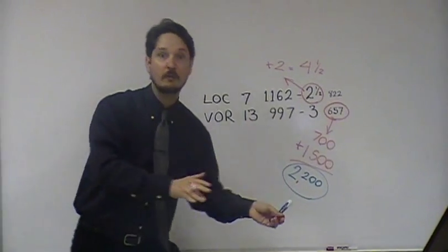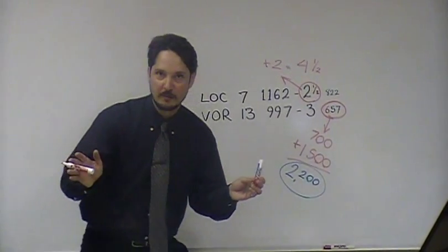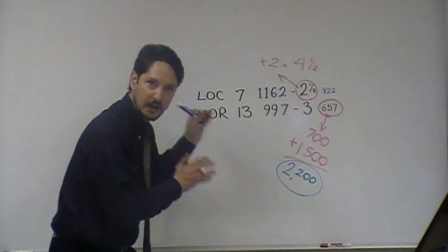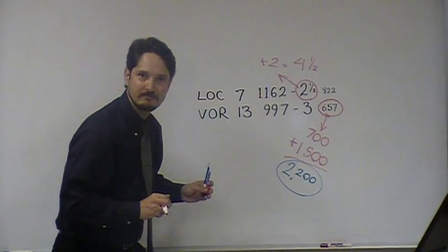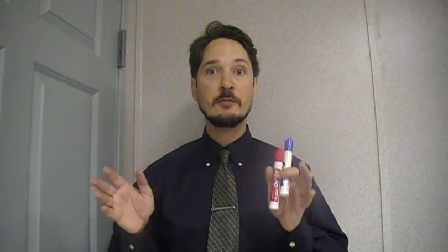Therefore, we need a 2,200-foot ceiling and 4½ statute miles of visibility forecast to exist from at least one hour before until at least one hour after our estimated time of arrival in order to not have to designate an IFR alternate. And remember, if this process gives you less than 2,000, use 2,000; if it gives you less than 3, use 3. The answer will never be less than 2,000 and 3, but it will often be more, as we've just seen.